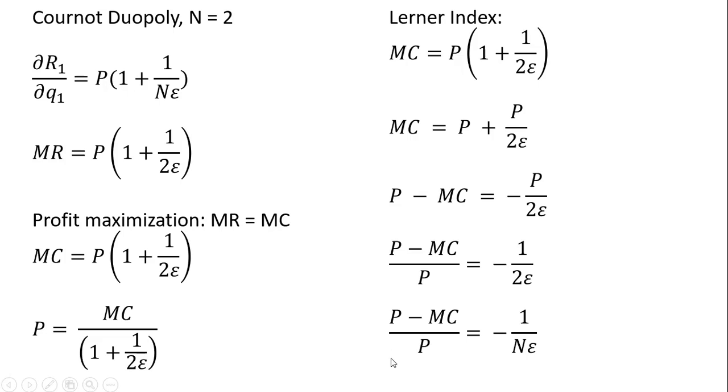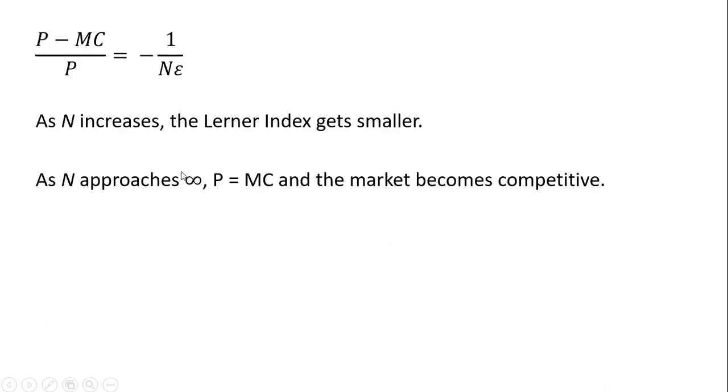In general, the Lerner Index for an N-firm Cournot market is (P - MC)/P = -1/(Nε). To summarize: as N increases, the Lerner Index gets smaller. As N approaches infinity, price approaches marginal cost and the market becomes highly competitive.